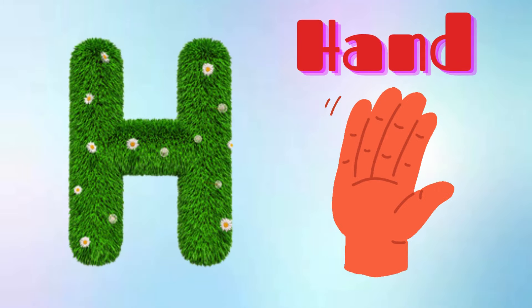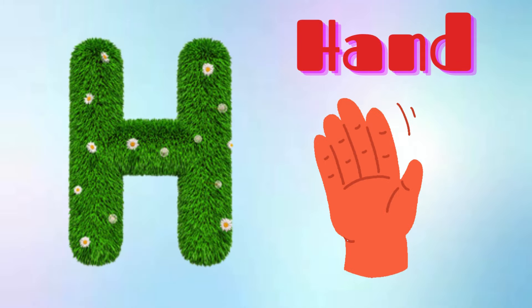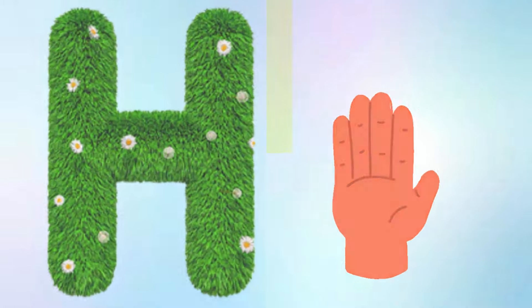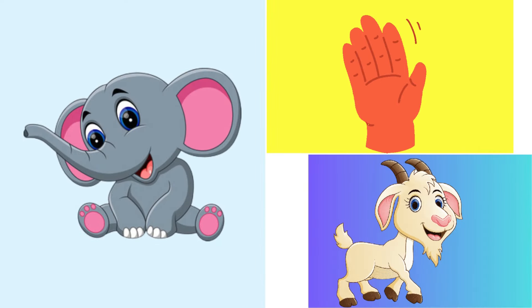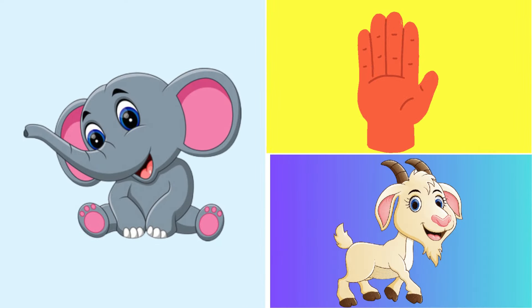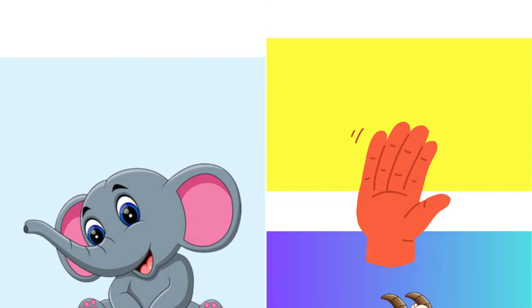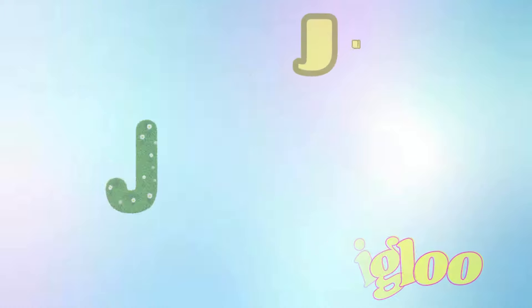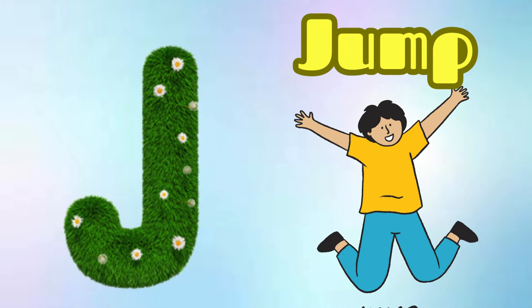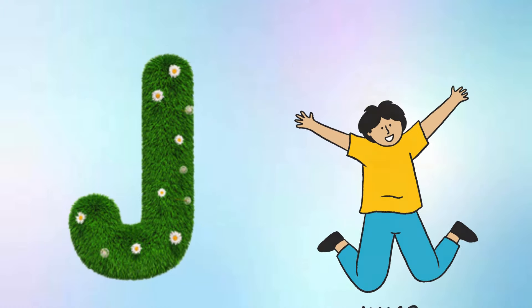H is for Hand, H-H-H-Hand. I is for Igloo, I-I-Igloo. J is for Jump, J-J-Jump.